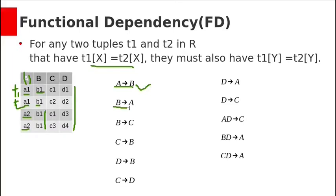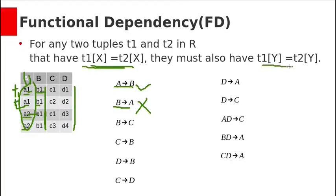Now let's check B→A. The B values b1, b1 are equal, but the corresponding A values are not equal — for b1 you have a1, and for this b1 you have a2. So for these two different rows, you have the same X value but different Y values. Therefore B→A is not a valid functional dependency.